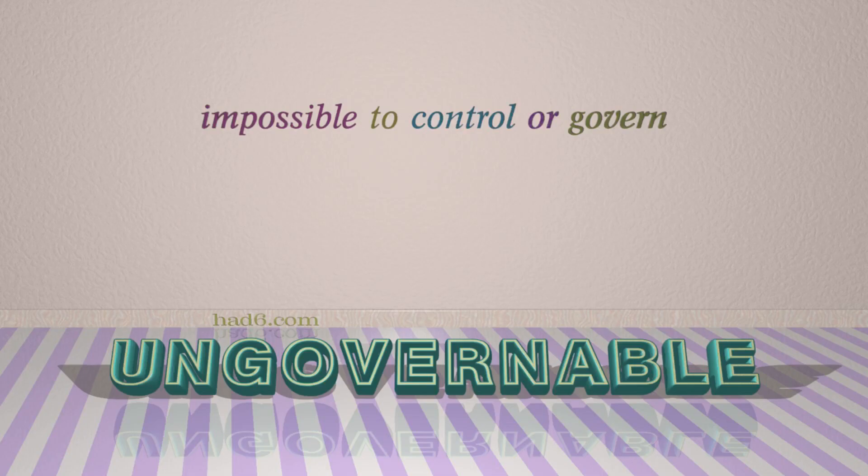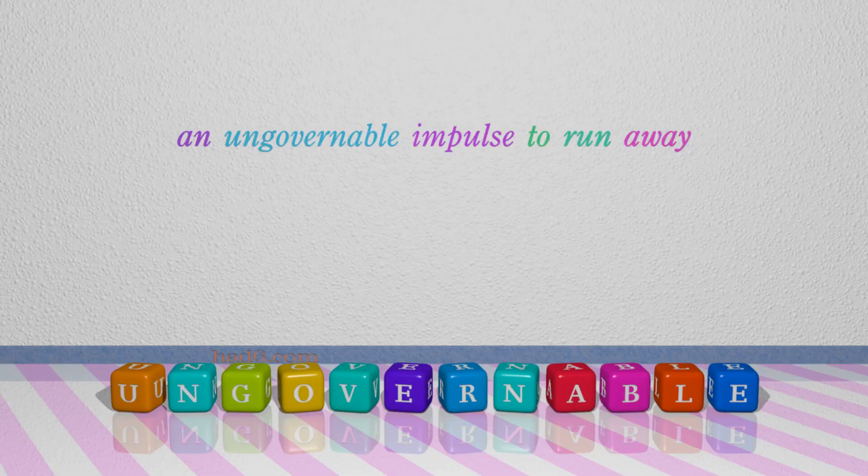Number 7: Ungovernable, which means impossible to control or govern. For example: An ungovernable impulse to run away.